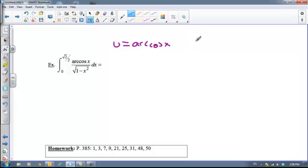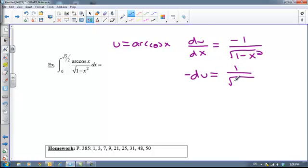Then what is du dx? Well, we've learned yesterday that du dx is going to equal negative 1 over the square root of 1 minus x squared. And this is where we want to look back at our original problem and can we solve this differential equation for dx over the square root of 1 minus x squared. And of course we can. This means that negative du is equal to 1 over the square root of 1 minus x squared times dx.